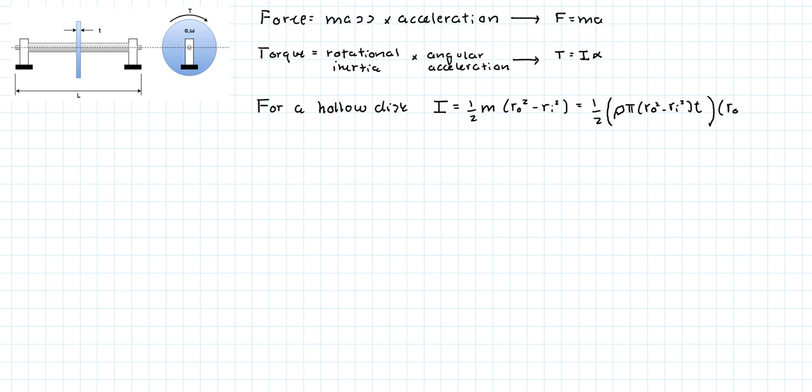Okay, so let's work this out. One-half times rho times pi times the thickness times the outer diameter squared minus the inner diameter squared, all of that squared.